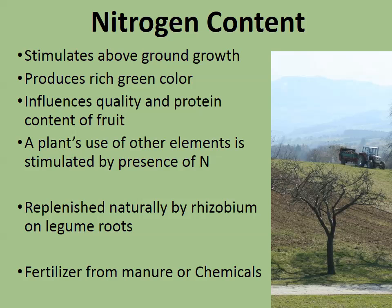Nitrogen is replenished naturally by rhizobium on legume roots, and also by letting fields lie fallow — leaving them alone for a season — allowing different things to fix nitrogen into the soil. We can also add it through fertilizer from manure, which is an organic method, or from chemicals, usually inorganic.